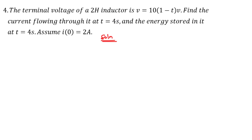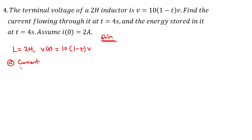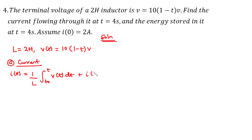First we want to find the current flowing through the inductor at t equals 4 seconds. The inductance is 2 henrys and the voltage v(t) = 10(1 − t) volts. The current expression is i(t) = one over L times the integral from t-naught to t of v(t) dt plus the initial current i(t₀).